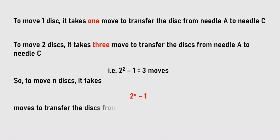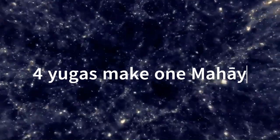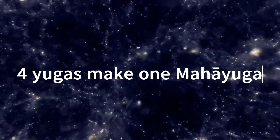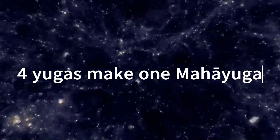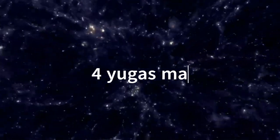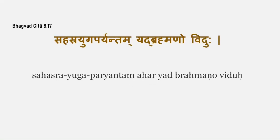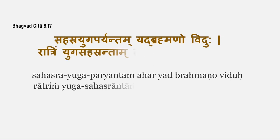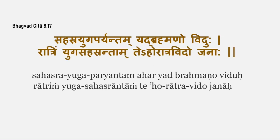Abh ye anukraman Brahma se sambandit samay ke asanatan maapan se chudha hai. 4 yugou ke ek chakr mein huwa ek maha yug. Bhagavad-gita chapter 8 verse 17 says: Sahasrayuga paryantam yad brahmano viduhu ratrim yuga sahasrantham teho ratra viduhu janaha.